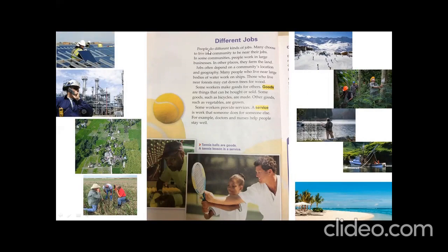Different jobs. People do different kinds of jobs. Many choose to live in a community to be near their jobs. Let's start here. These two lines, that's the opening sentence, one of the most important sentences when you're reading text, especially informational text. The first sentence says that people do different jobs, and then they decide to live at that place where they find a job. We know that, right?